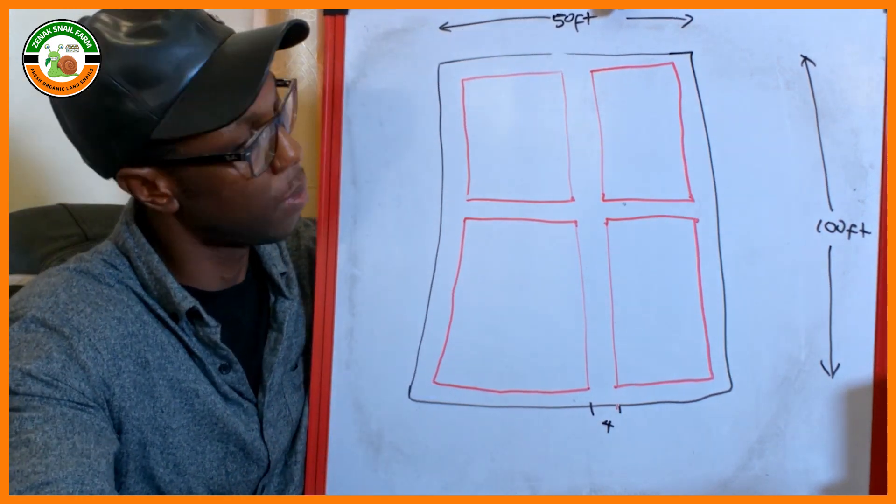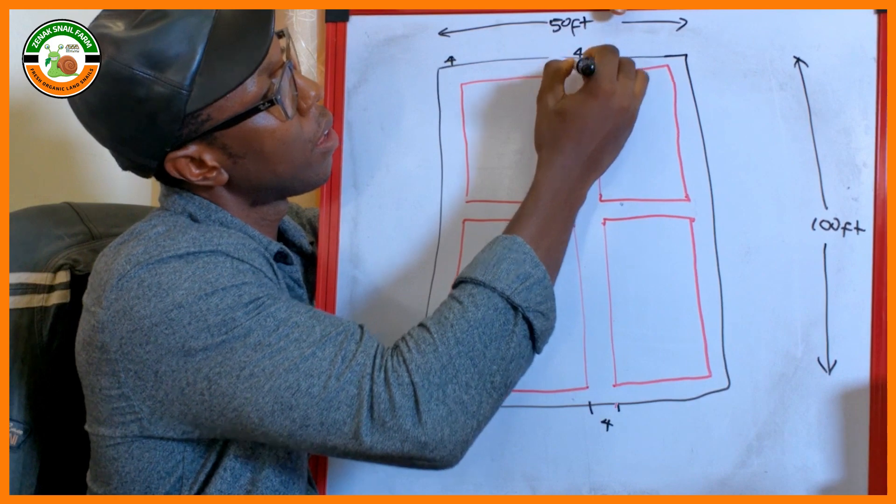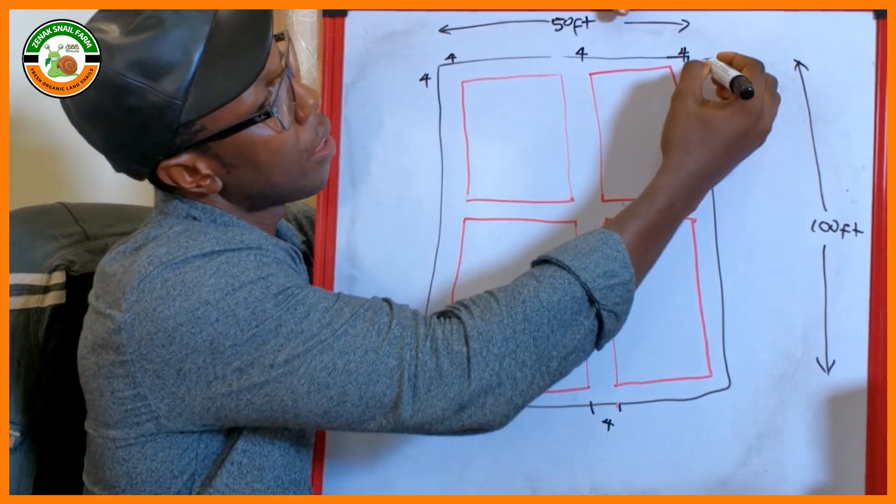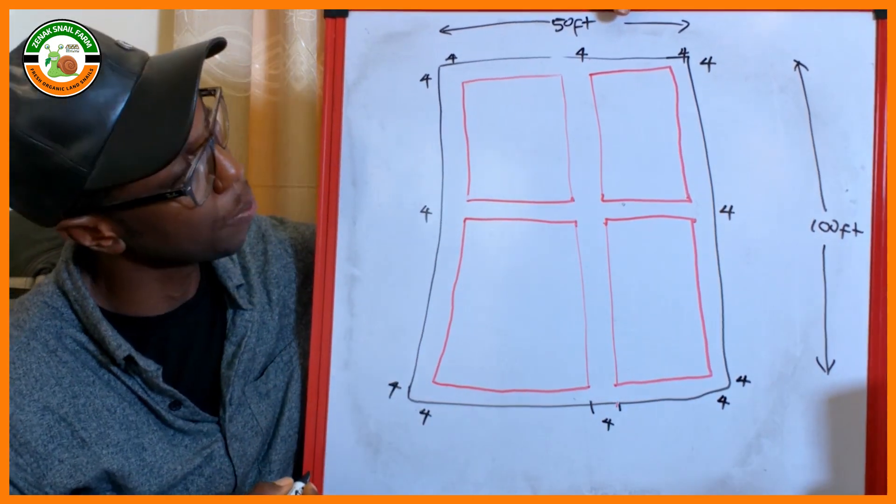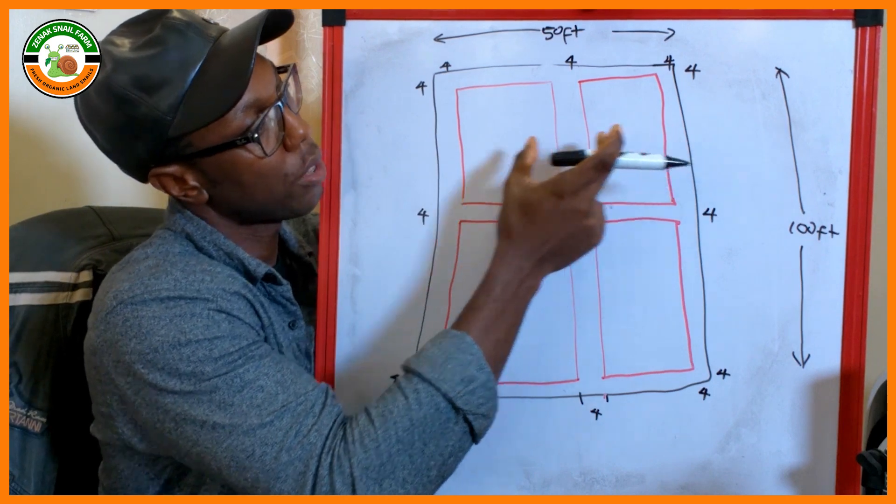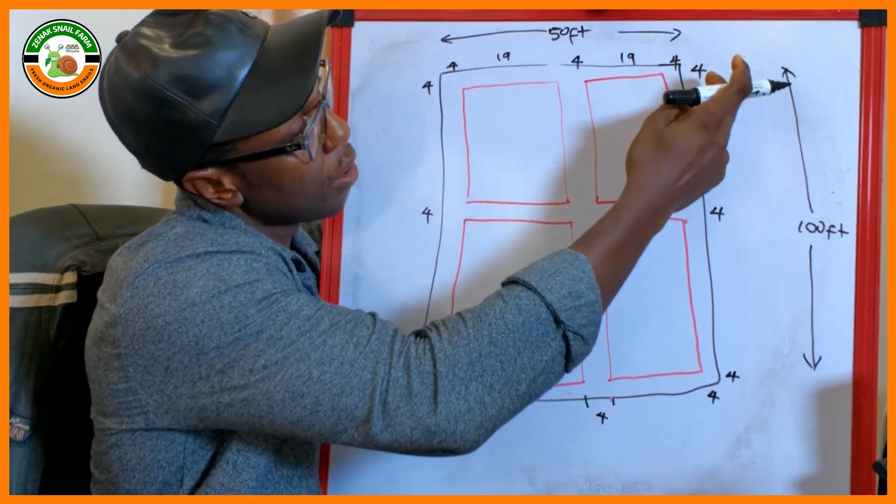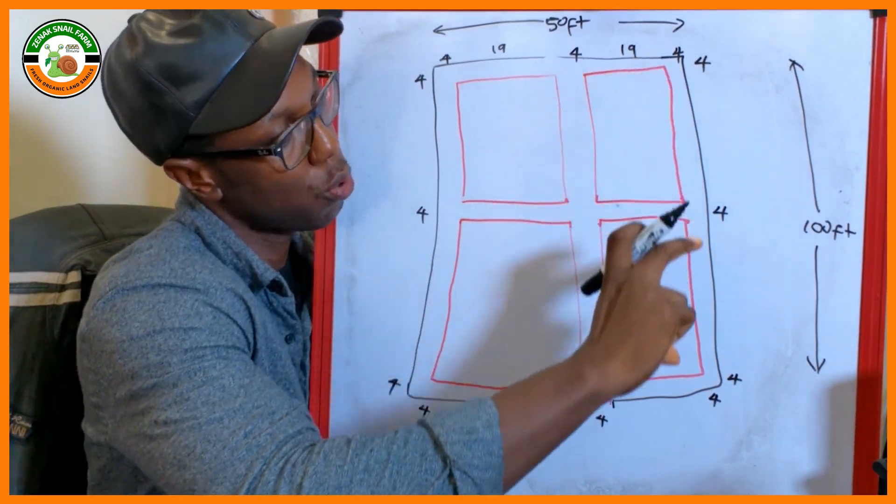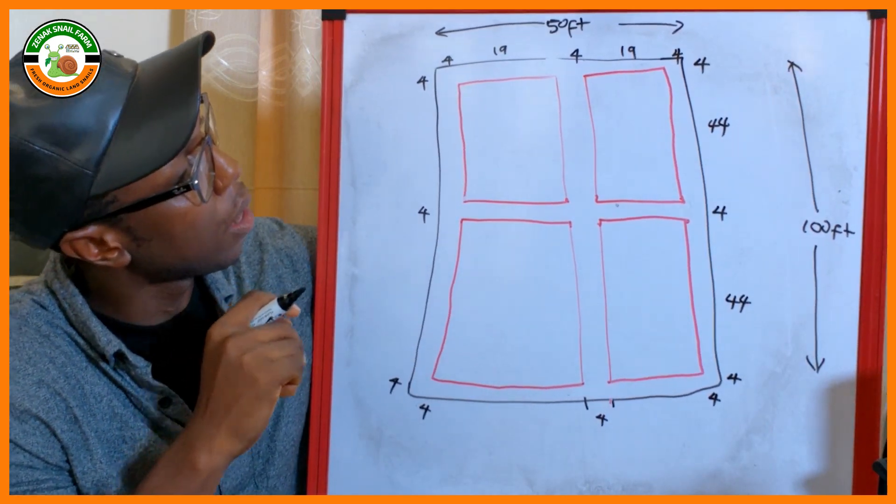Now once we have this, let's see the dimensions of this preliminary module and walkway. Here we have 4 feet, 4 feet here, 4 feet there. Now here we have 4, 4, 4 – 12 feet. If we subtract 12 feet from 50 feet, we have 38 feet to share between these two modules. That means here it's 19 and here it's 19. Likewise, 4, 4, 4 – 12 feet. If we subtract 12 feet from 100 feet, we have 88 feet to share between these two large modules. So here we have 44 feet here and 44 feet here.